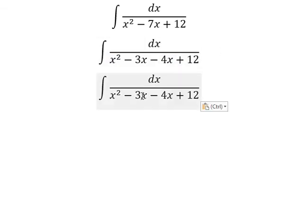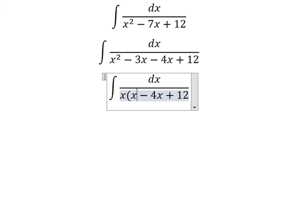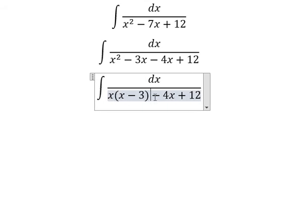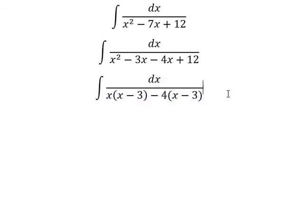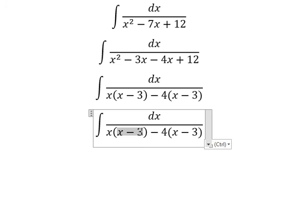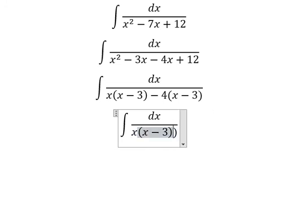Next we can do factorization. We factor out x from the first two terms and negative 4 from the last two terms. So we have x(x-3) minus 4(x-3). We can factor this further into (x-4)(x-3).